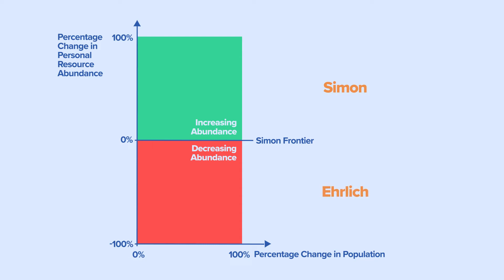These areas can be divided further. Ehrlich argued that resources were fixed or shrinking. So, as the population increases, personal resources become proportionally scarcer. We call this line of fixed resources the Ehrlich Wall. Along the wall, the global resource pie remains the same size, but everyone's personal resource slices get proportionally smaller.